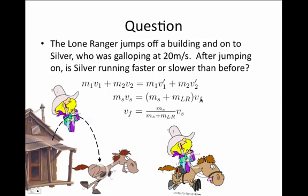That will always be a ratio that's less than one. And so the right-hand side will always be less than the initial speed of the horse. And as a result, after the Lone Ranger hops on his horse, the speed will always be less.